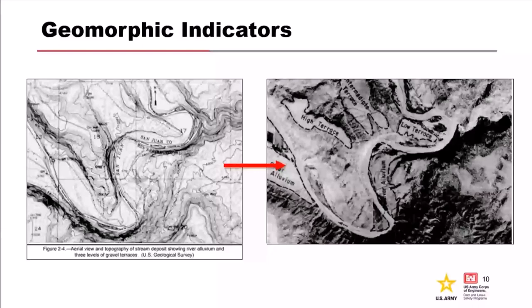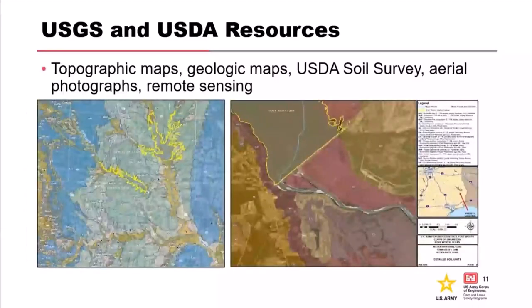We can compare this information to any available site data, construction data, and as-built information to assess post-dam conditions. A lot of this information is easily available through USGS — they have quite a cache of geologic maps and information. Topographic maps, geologic maps, USDA soil survey maps, aerial photographs, and remote sensing are all available. Historic maps are at USGS and USDA, which also have spatial files for download. Here are two examples of easily accessible information you can download for your project.